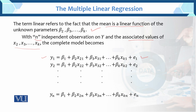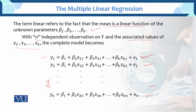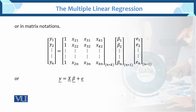Now we write all these models in matrix notation. The vector y = [y1, y2, ..., yn] has dimension n×1. The matrix X has rows corresponding to each observation, with the first column being 1s (for the intercept β1) followed by columns x21, x22, ..., xn for each independent variable — making X an n×k matrix.